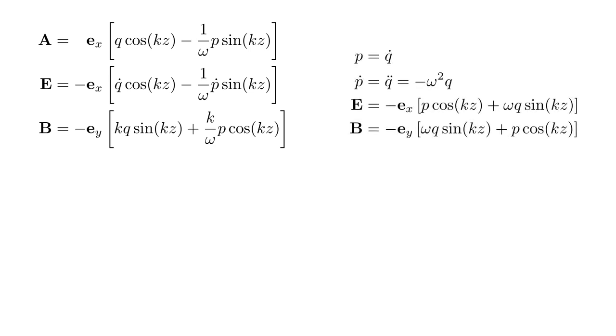p = q̇, so ṗ = q̈, which equals -ω²q. Using these relations, and the fact that k = ω, we can rewrite the electric field as -e_x times the quantity [p cos(kz) + ωq sin(kz)]. The magnetic field is -e_y times the same quantity.